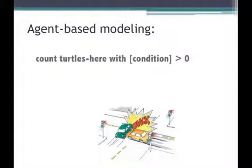To do that, I'd use count turtles-here with, and then the condition in square brackets. And I'd test to see if that count turtles-here with condition is greater than zero. If that is true, then I'll know that there is at least one turtle on the patch with me that satisfies the condition.